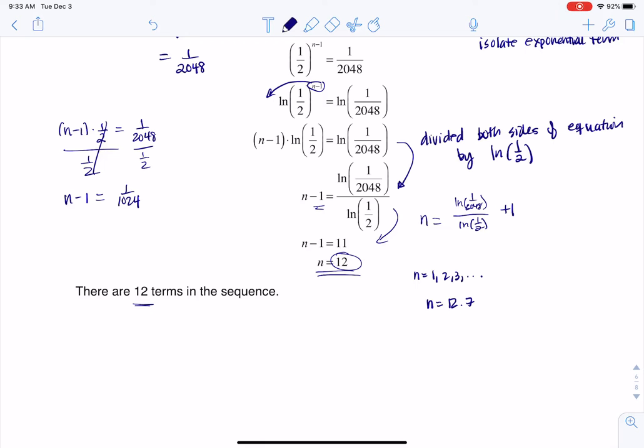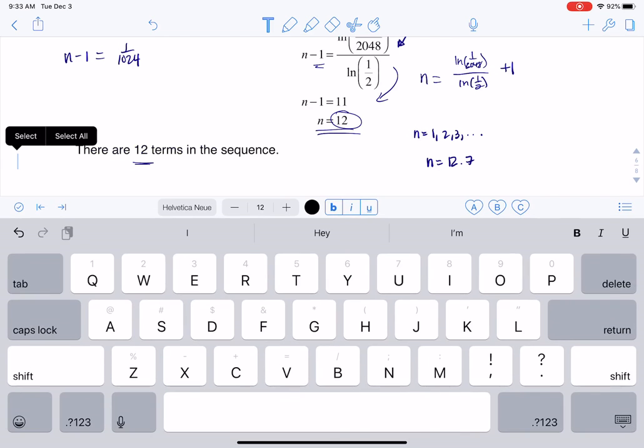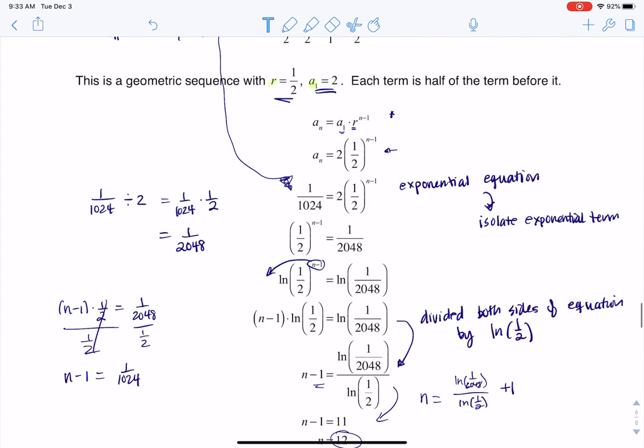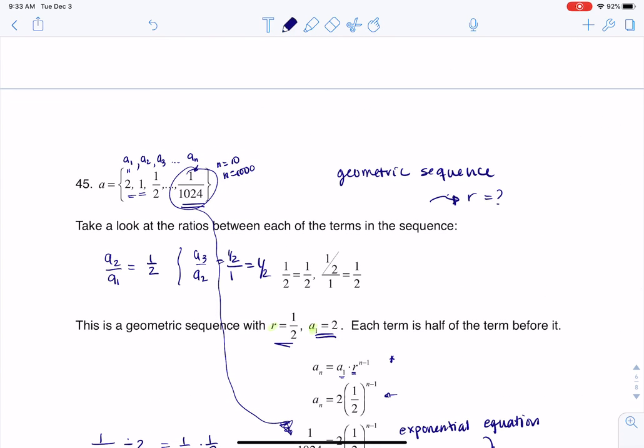And this is the 12th term in the sequence. And if you had time on an exam, you could actually go and check this. And here's what I mean. If I scroll up here, I could go ahead and I could just test this out. So again, we knew a sub 1 was 2, and then 1, and then 1 half. And we know the next term will be 1 fourth, and then 1 eighth, and then 1 16th, and then 1 over 32, and then 1 over 64.